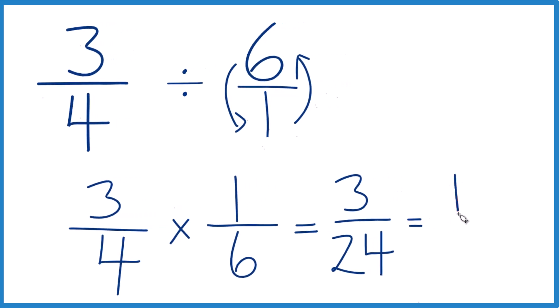3 divided by 3, that's 1. 24 divided by 3 is 8. So 3 fourths divided by 6, or 3 fourths times 1 sixth, that gives us 1 eighth.